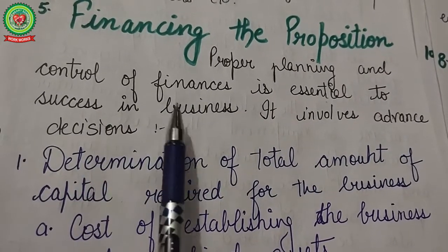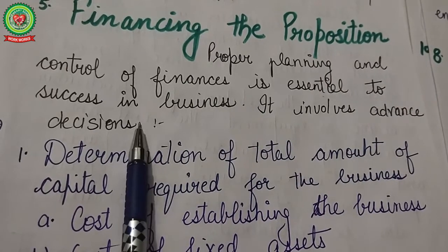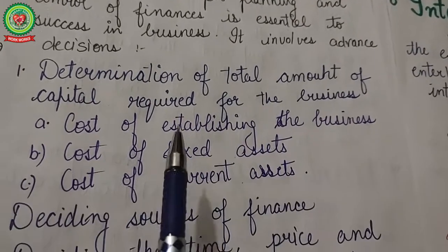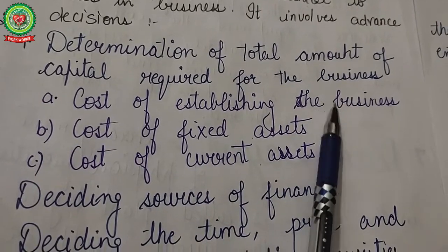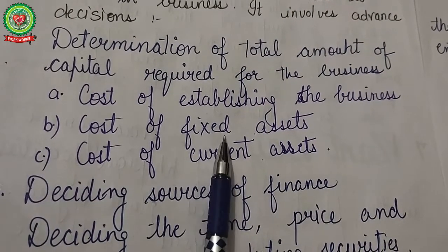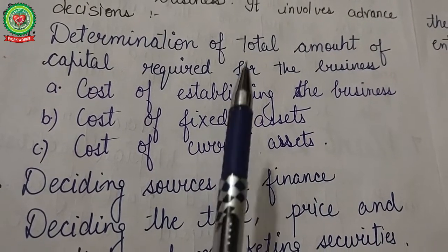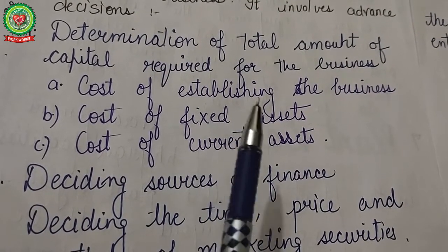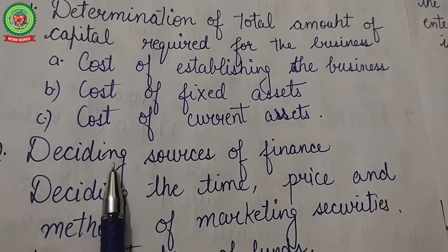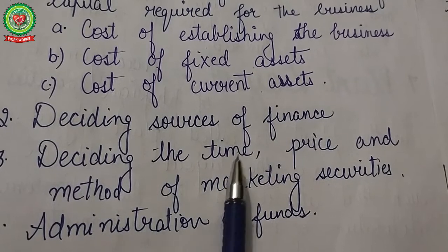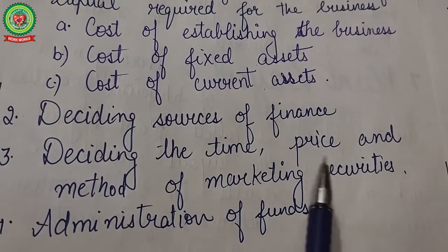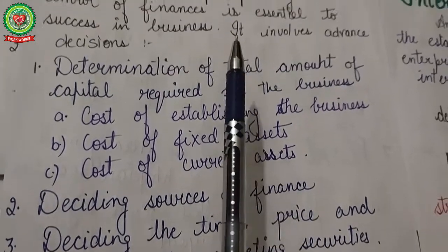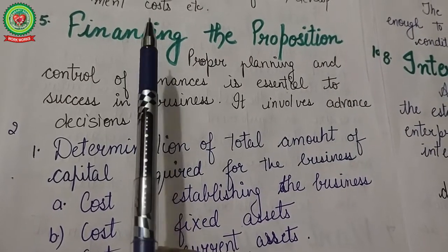The next step is financing the proposition. Proper planning and control of finances is essential for success in business. It involves decisions on determining the total capital required, including promotional expenses, cost of fixed assets like land, building, plant, and machinery, and cost of current assets like stock of raw material, cash, and inventory. It also involves deciding sources of finance, the time, price and method of issuing financial securities, and administration of funds to control and manage finances for the new enterprise.